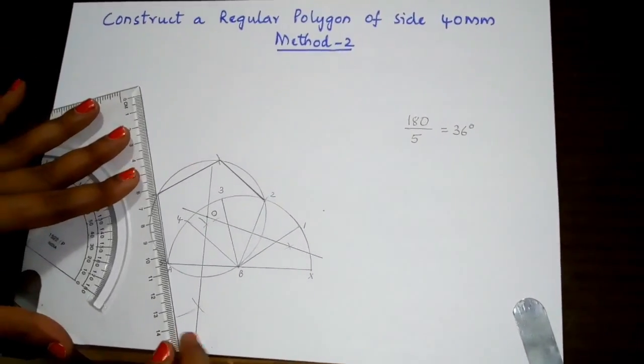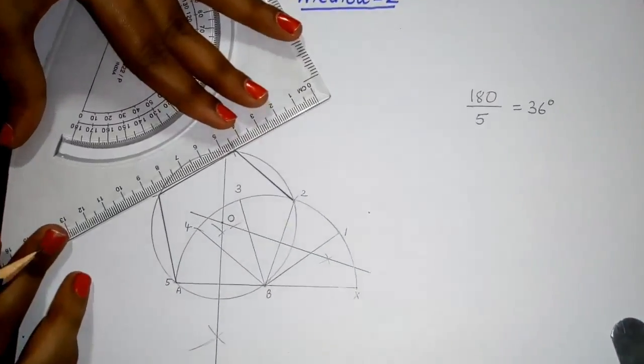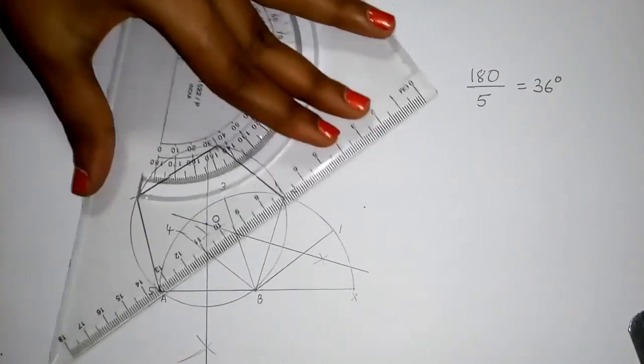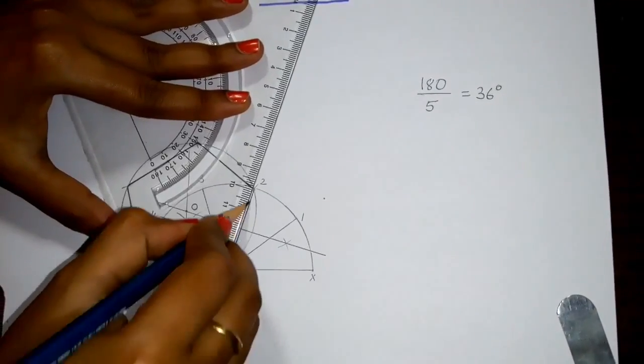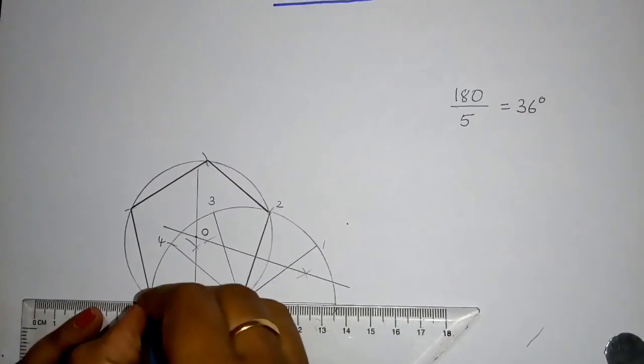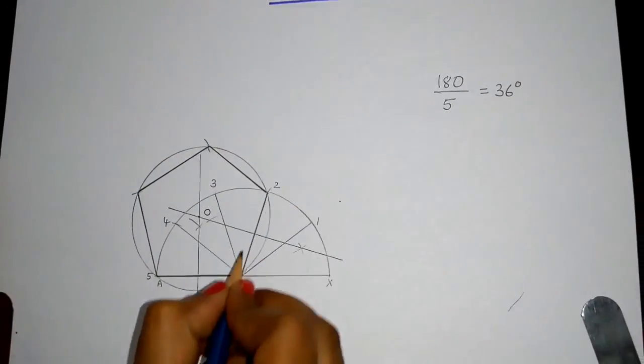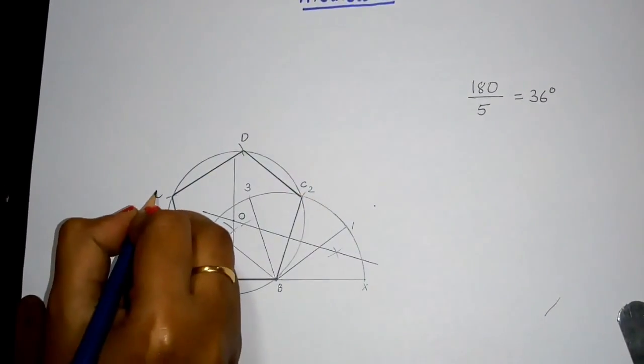Now we have drawn a pentagon. Darken the five sides of the pentagon using an HB pencil. Name the vertices as A, B, C, D, and E.